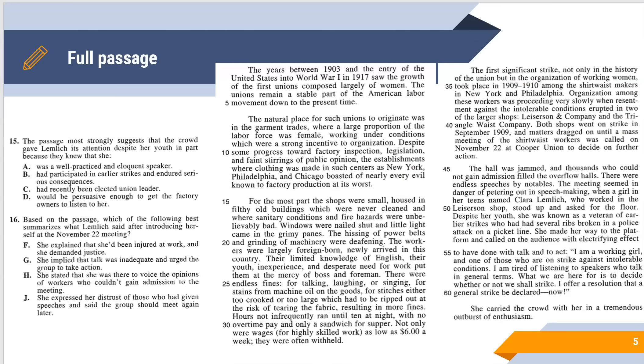Here are questions 15 and 16. Please pause the video now and see if you can find answers. Number 15 says the passage most strongly suggests that the crowd gave Lemlich its attention despite her youth, in part because they knew that she, and the answer is B: had participated in earlier strikes and endured serious consequences. Look to lines 51 through 53. She has a history of organizing and fighting for labor rights, even at the expense of her health. The passage never says that she's a practiced speaker or elected leader in any sense. I get why those might be attractive distractors, so to speak, but B is going to be the only answer that is directly supported by the passage.